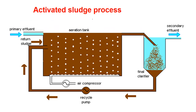Here we can see an example with a diagram of the biological process — this is the aerobic activated sludge process. Sludge is the solid part coming out after treatment and will contain the bacteria. That sludge is used like a culture and added with the incoming effluent. When in the presence of air and given sufficient time, these microorganisms grow and digest all the solid materials present. That is the activated sludge process.